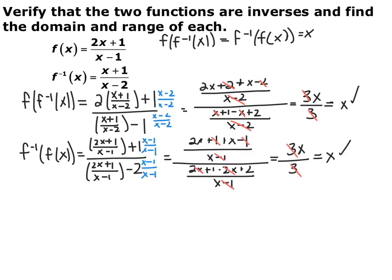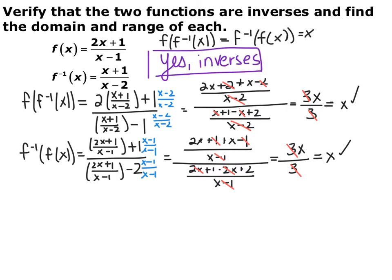For f⁻¹ ∘ f, every time you see an x in f⁻¹, you replace it with the entire function (2x+1)/(x−1). Making common denominators and simplifying, it does in fact simplify down to x. Now you can confirm that yes, they are in fact inverses of each other.